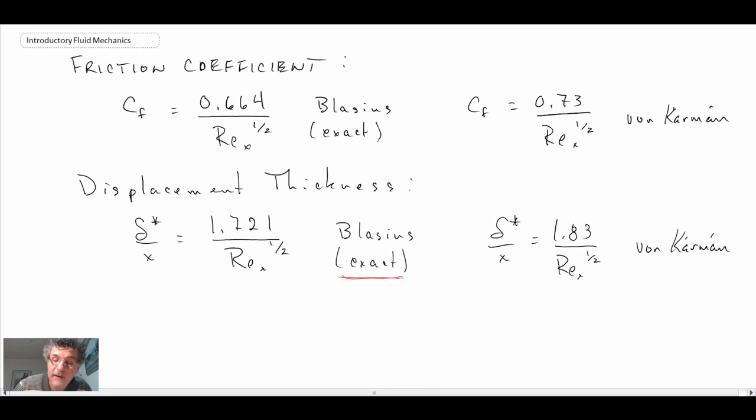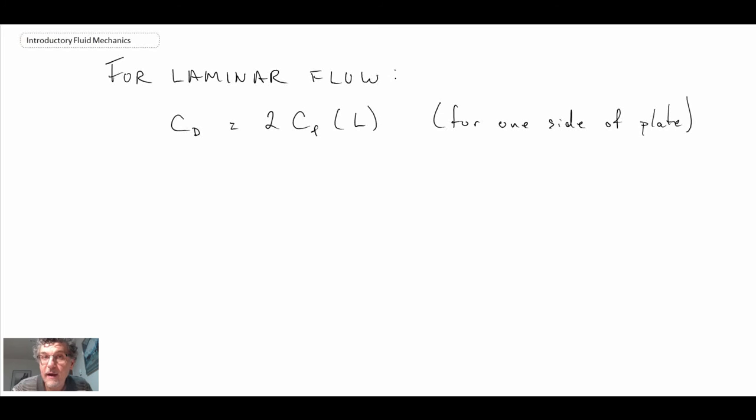The final comment for laminar flow is that the drag coefficient on a plate is related to the friction coefficient evaluated at the length of the plate. The drag on a plate on one side is equal to two times the friction coefficient at the end of that plate.